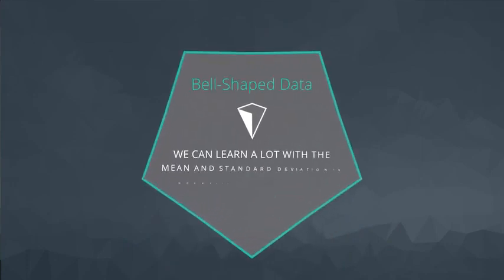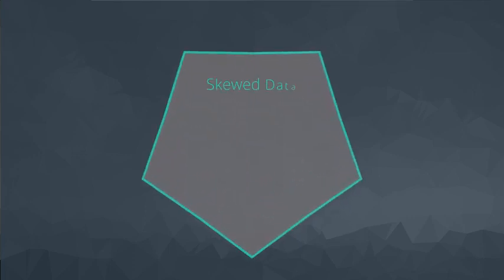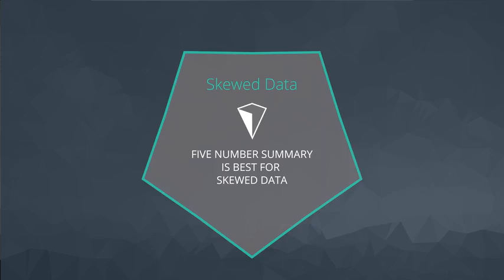Third, if you are working with data that are normally distributed — the bell shape that we saw before — you can find out every little detail about the data with only the mean and the standard deviation. This may seem surprising, but it's true. However, if our data are skewed, the five-number summary provides much more information for these data sets than the mean and the standard deviation can provide.